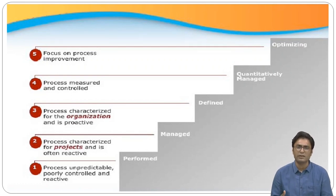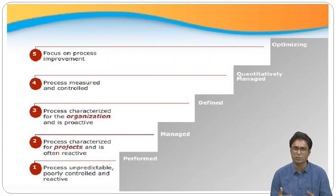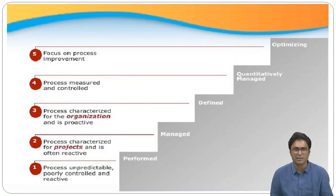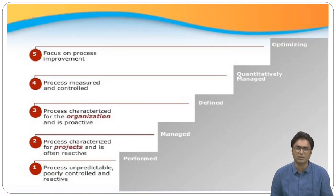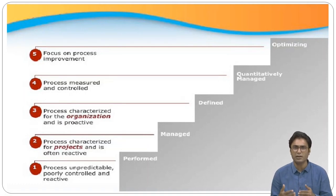Maturity level three is Defined. At this level, processes are well characterized and understood, and are described in standards, procedures, tools, and methods. The standards, process descriptions, and procedures for a project are tailored from the organization's set of standard processes to suit a particular project or organizational need. Processes performed across the organization are consistent, except for differences allowed by tailoring guidelines, and are managed more proactively using an understanding of interrelationships between process activities and detailed process measures.